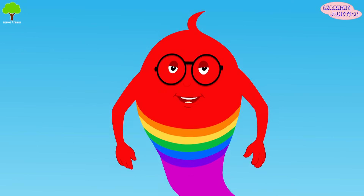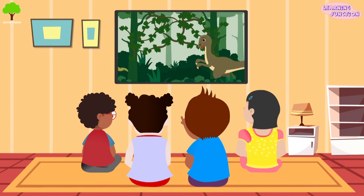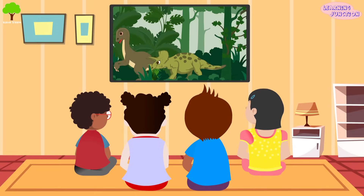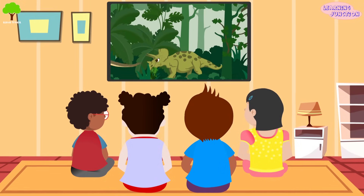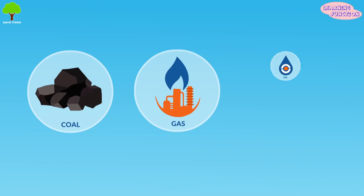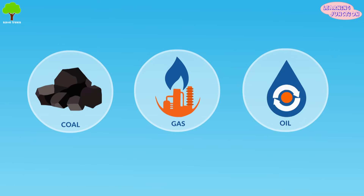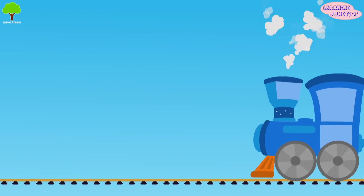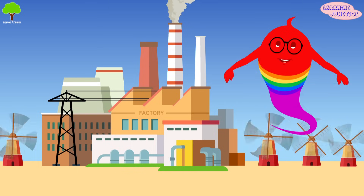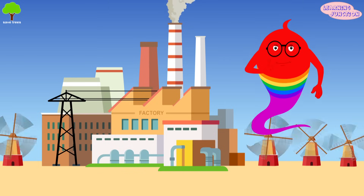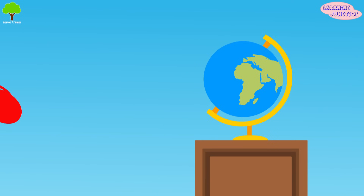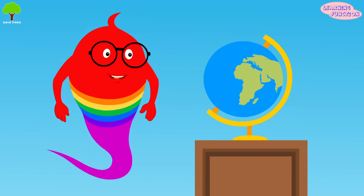Fossil remains can give us an idea about how ancient animals and plants obtained food, reproduced, and how they behaved. Coal, gas, and oil are called fossil fuels because they are formed from the organic remains of prehistoric organisms. They are abundant and accessible and provide a huge amount of concentrated energy.